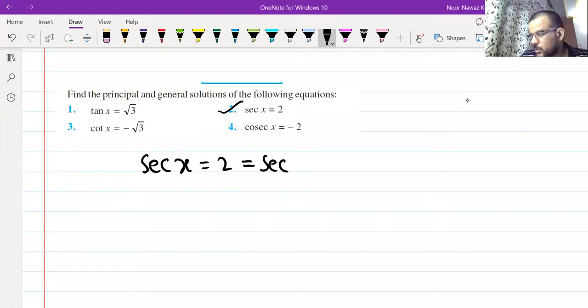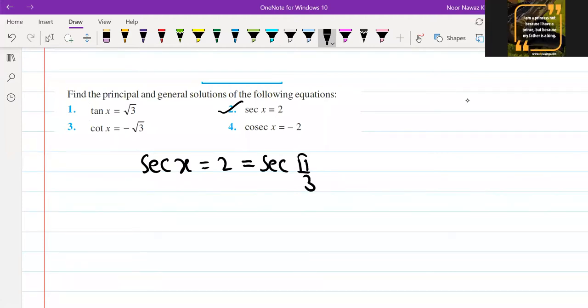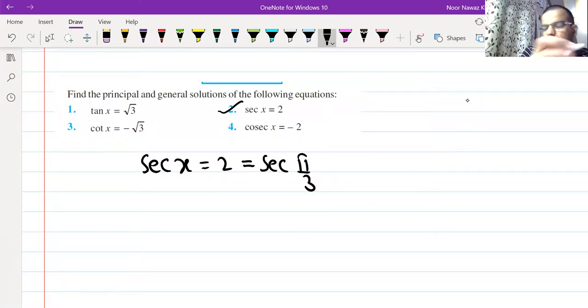sec x is equal to 2. sec 60 degrees is pi by 3. Now you have to see where is sec theta positive? First and fourth quadrant.